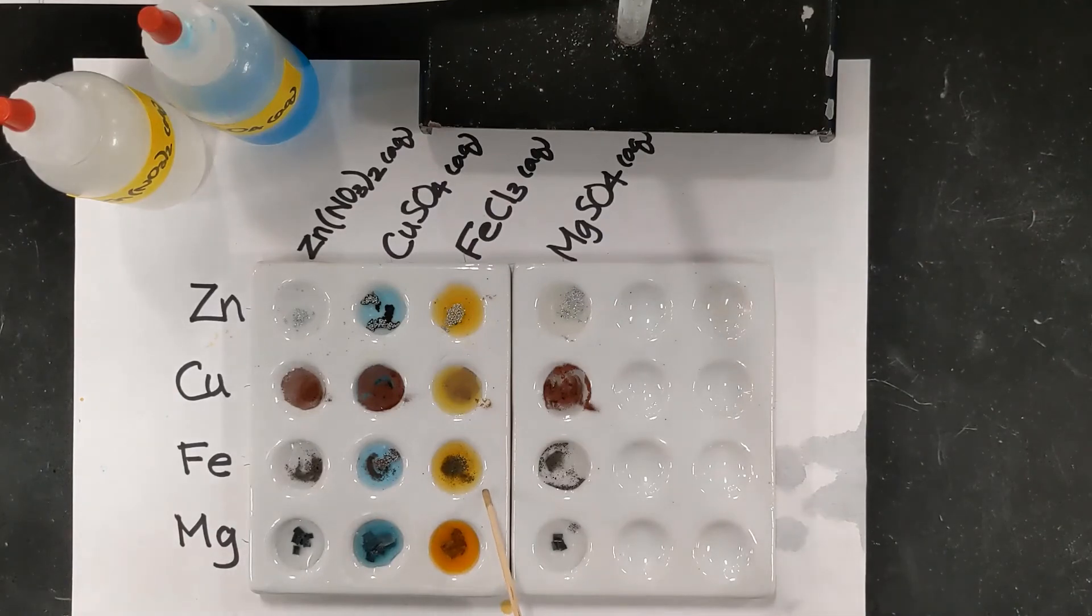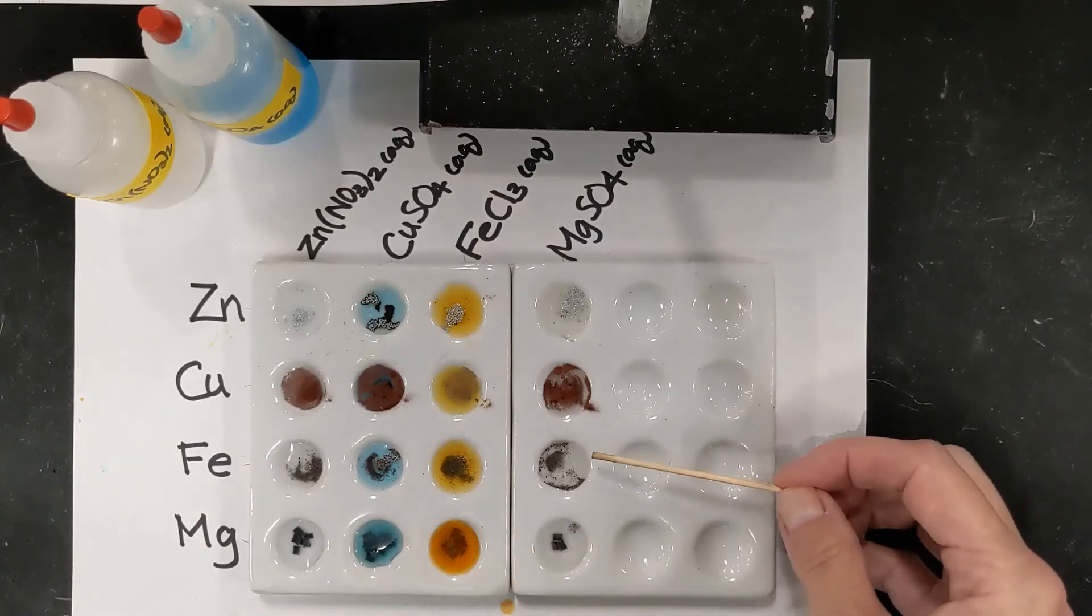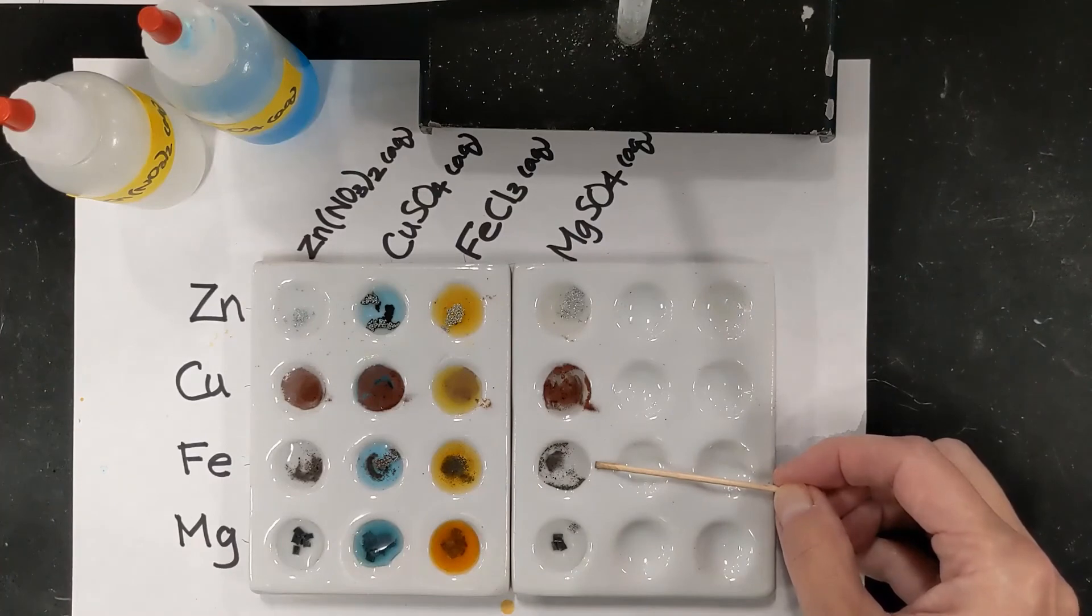Here, this is iron with iron three ions. So we'll call that one a no, right? It's not going to react with itself. And it also appears to be unchanged with the magnesium sulfate.